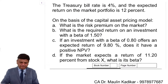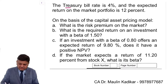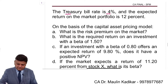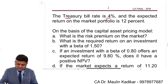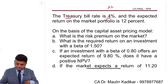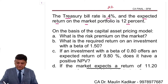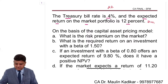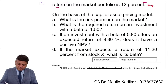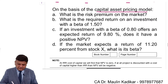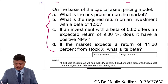Let us see the next question. The risk-free rate is 4%, i.e., the risk-free rate of return is 4%, and the expected return on the market portfolio is 12%, so RM is 12%. On the basis of CAPM there are 4 questions which you are required to answer.